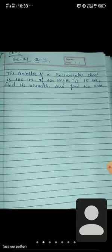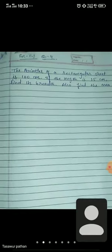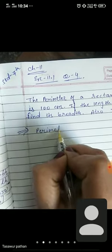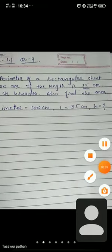Let's start with the formula. We will write the rectangular sheet's perimeter formula and put the given values in it, then we will find out its breadth. First, what is given? Perimeter is 100 cm. Length is equal to 35 cm. And breadth we will find out.